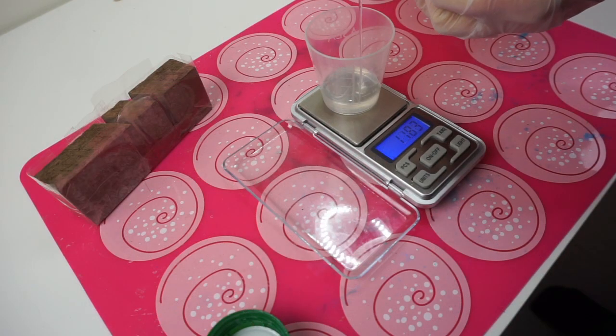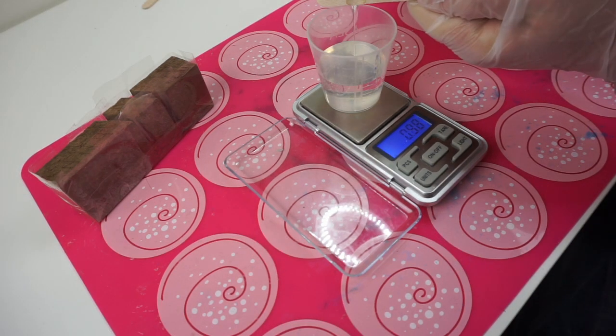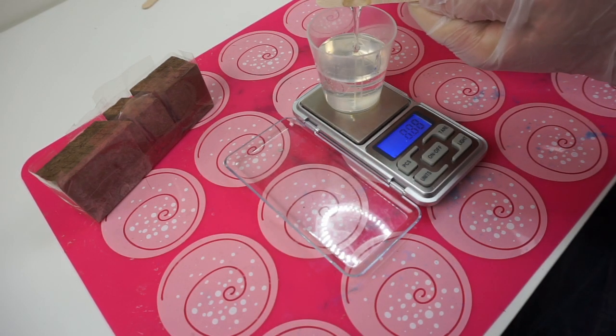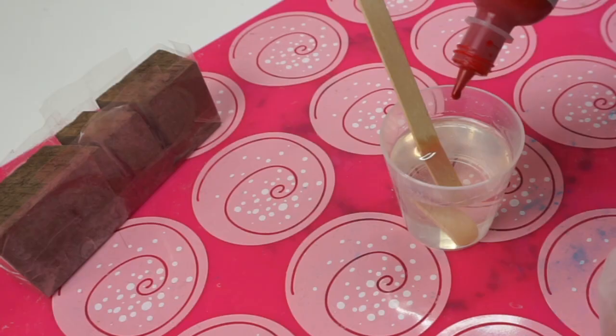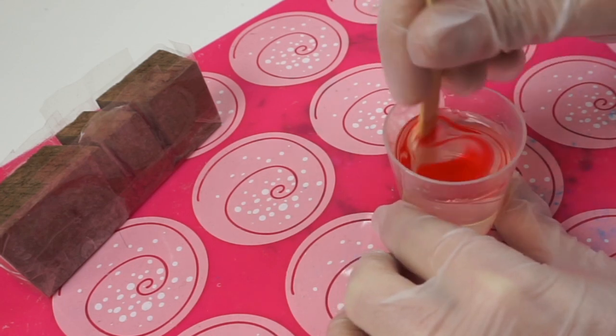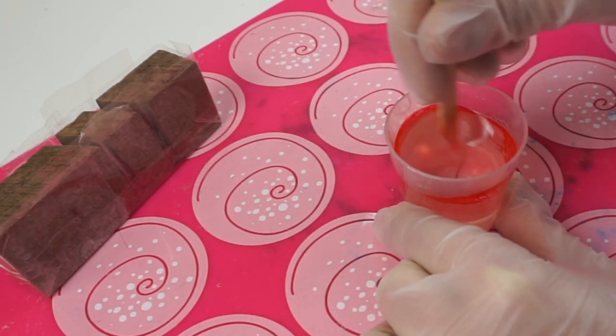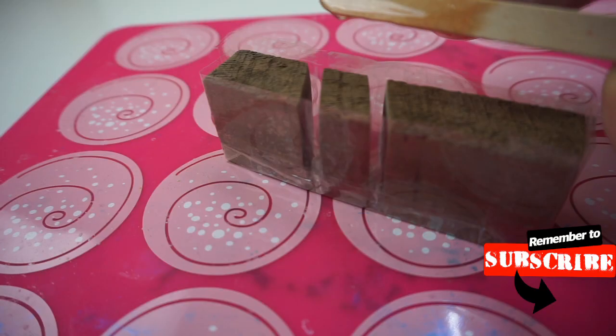Mixing up some resin, I'm using CCR fast-set resin, which really isn't that fast-setting compared to many other types of resin. It sets in about 24 hours, and with smaller pours like this one, you have about an hour of work time before it starts to solidify. So with some fine red pigment, we are ready to pour.